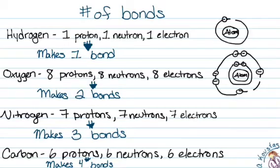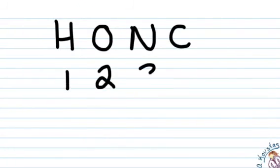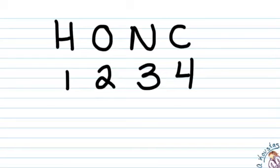Now while we could just draw a diagram of each of these atoms to visualize how many bonds they're going to make, we also have a little expression called HONC: H-O-N-C. Hydrogen makes one bond, oxygen makes two, nitrogen makes three, and carbon makes four.